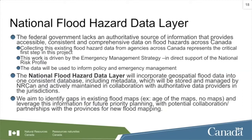The third flood-related data layer we're building is a national flood hazard data layer of current authoritative flood hazard datasets. This work is driven by the Emergency Management Strategy in direct support of the national risk profile and will inform policy and emergency management. The national flood hazard data layer will incorporate geospatial flood data into one consistent database including metadata, stored and managed by NRCan while actively maintained with authoritative data providers in the jurisdictions. We aim to identify gaps in existing flood maps — such as map age or areas with no maps — to leverage for future priority planning.